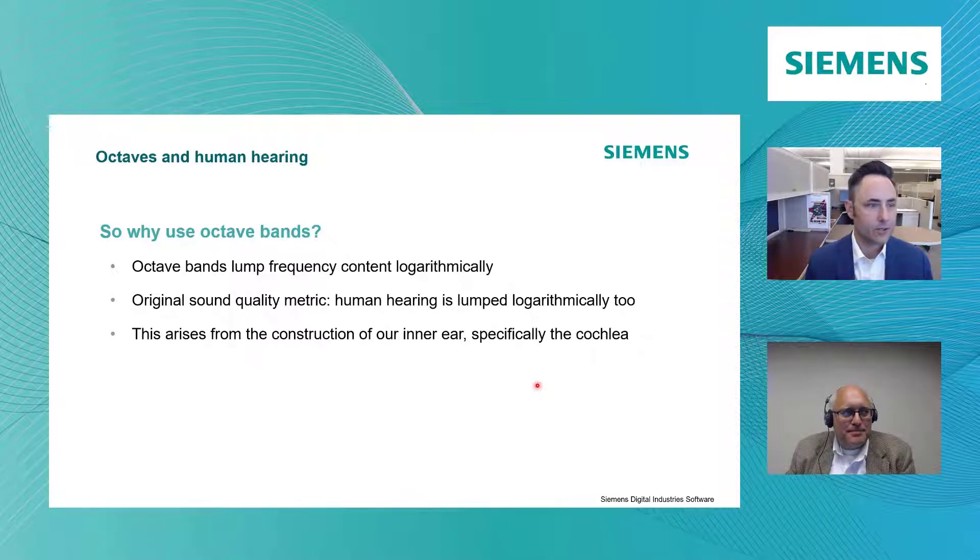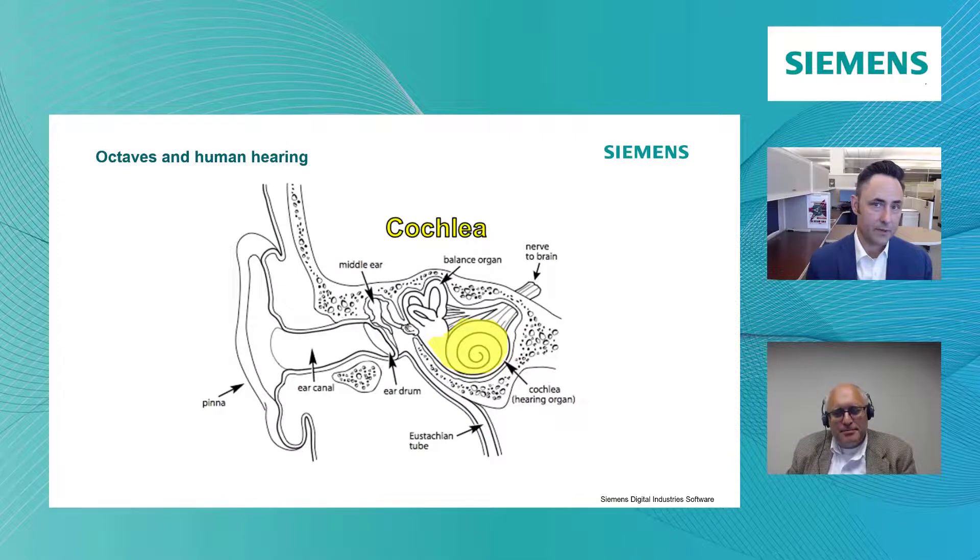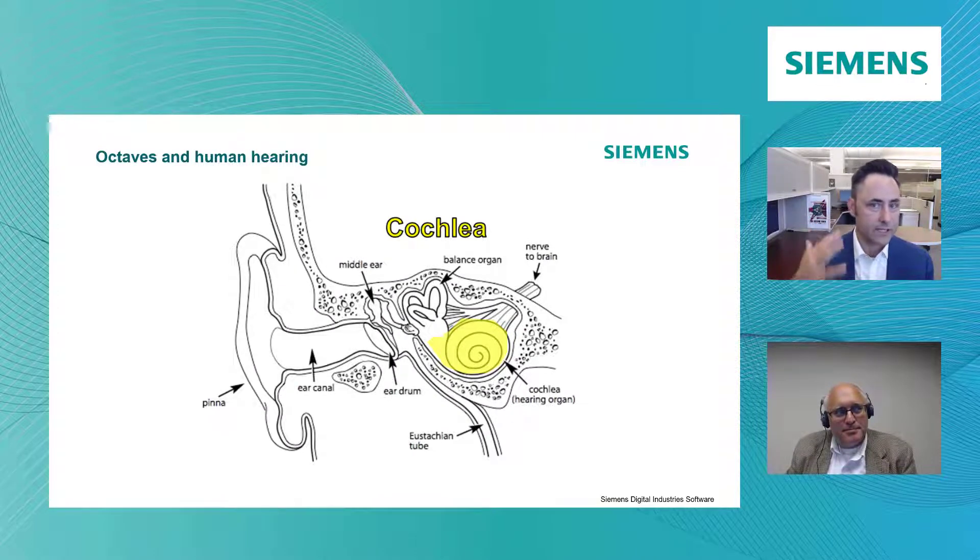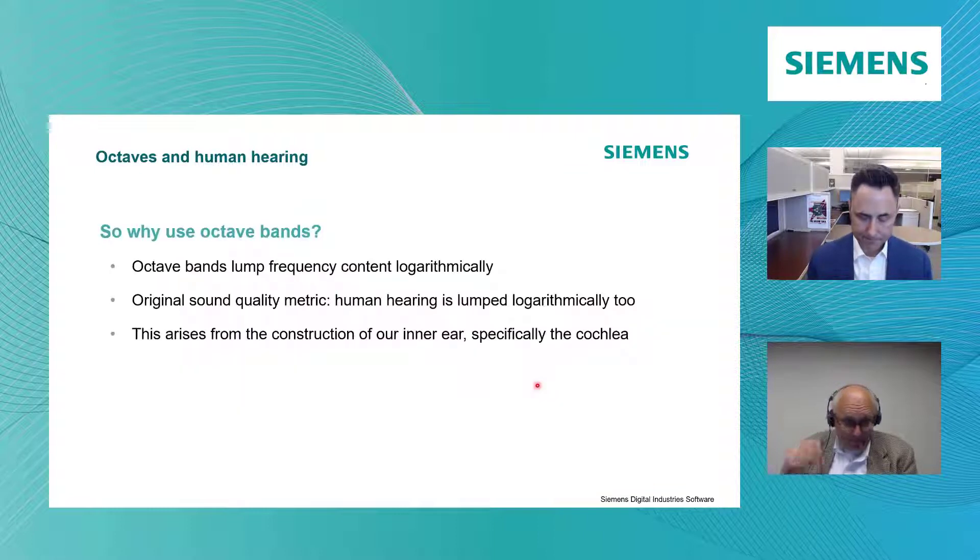Well, the octave bands lump frequency together into chunks logarithmically. And we do this because this is kind of what our ear does. And we didn't get into it today, but the way your ear works, the organ that's inside, it's called the cochlea, and it produces this effect. And so our brain hears these lumps of frequencies. It's sort of logarithmic in nature, and so we use octave bands to lump these frequencies in a similar manner.